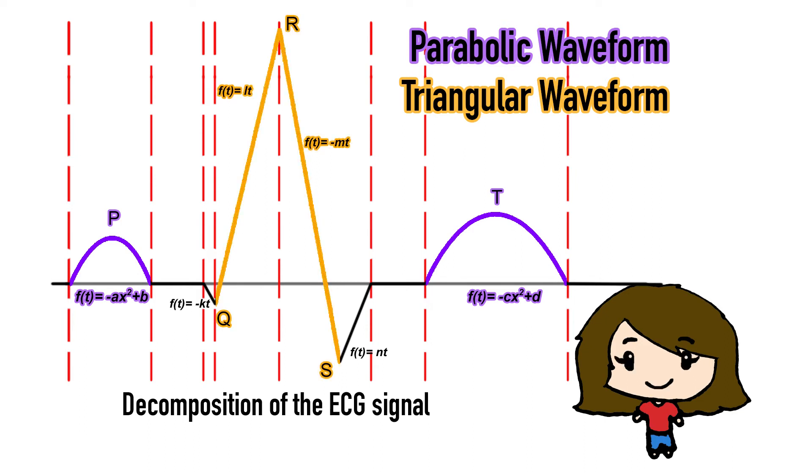The waveform in the QRS complex is triangular, and they can be divided into two parts, the ascending part and the descending part.